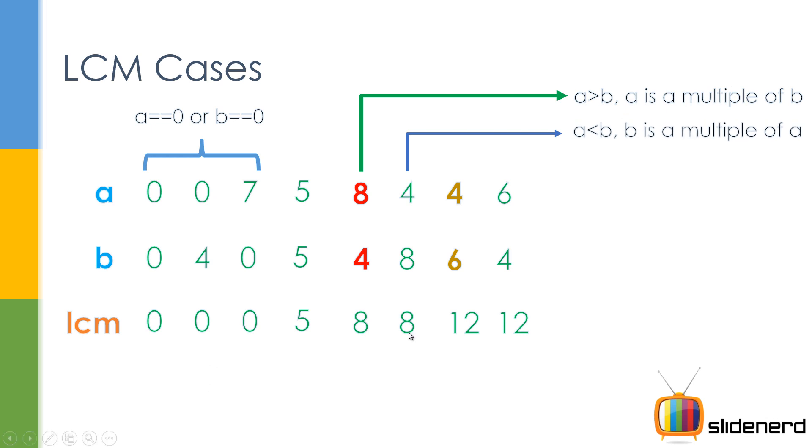You guys can see obviously over here, B itself is the LCM. And the normal case where A is less than B, but there are no multiples. And A is greater than B, again there are no multiples. So now, in this video, we're gonna probably talk about the first 6 cases over here, the last 2 cases. They're gonna be a long video, so I'm gonna be covering them in the next video.